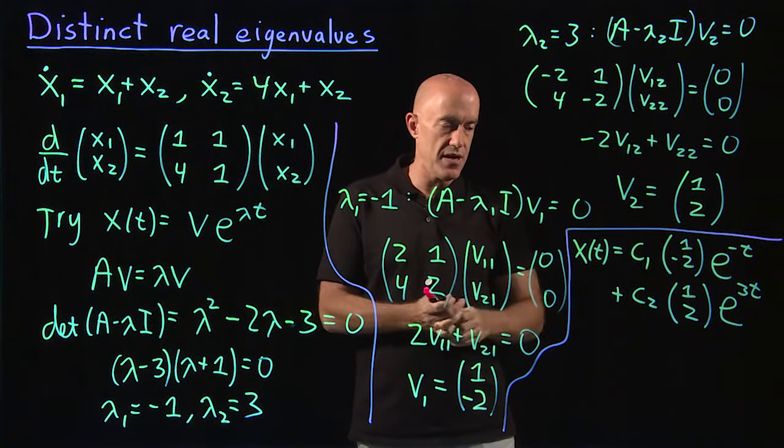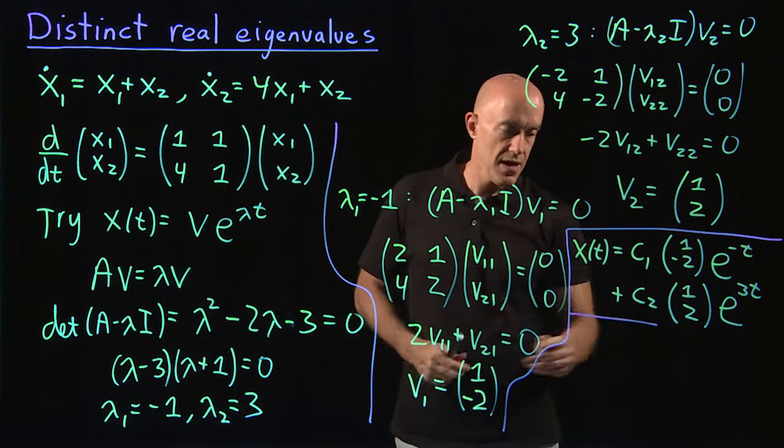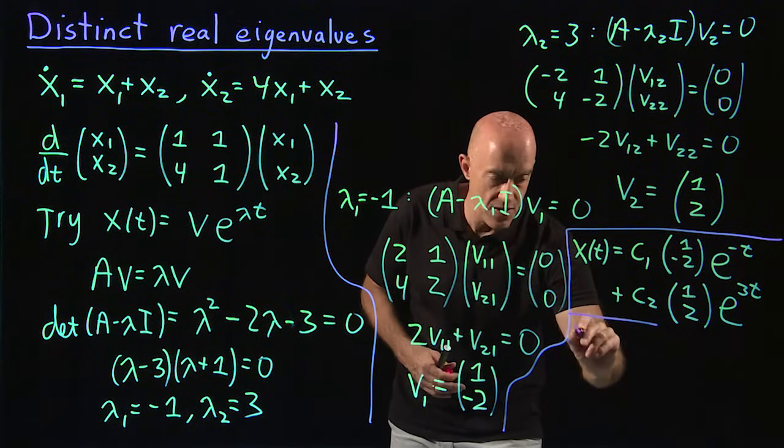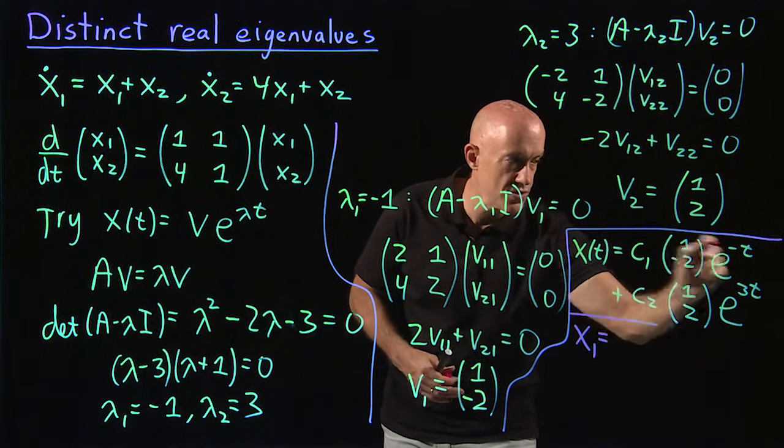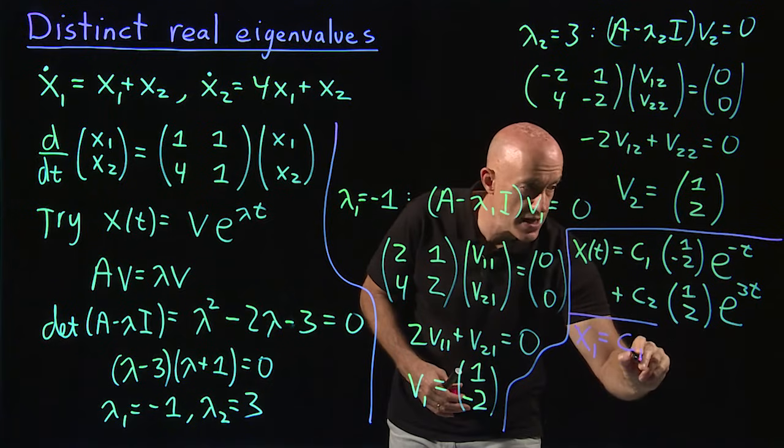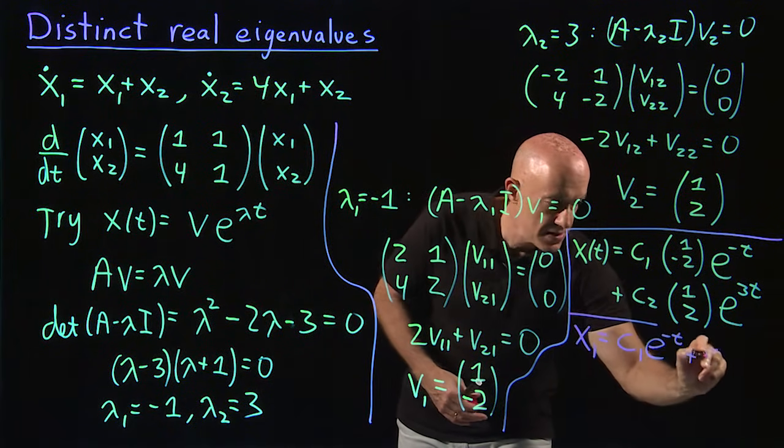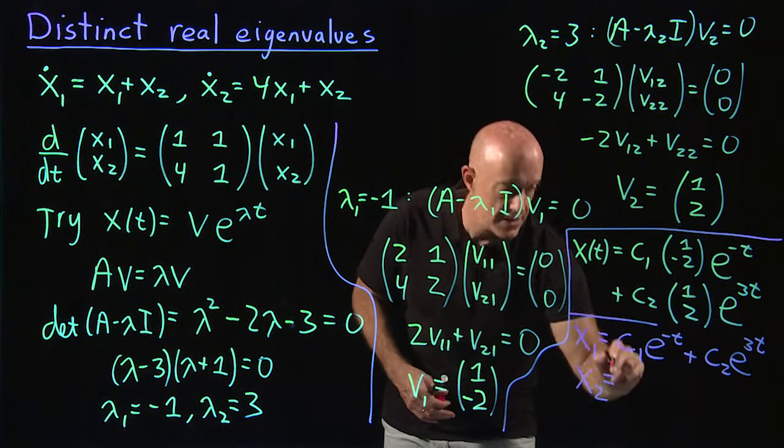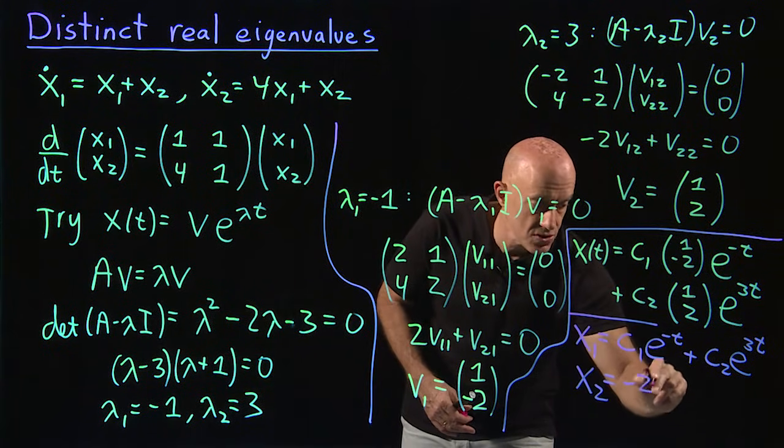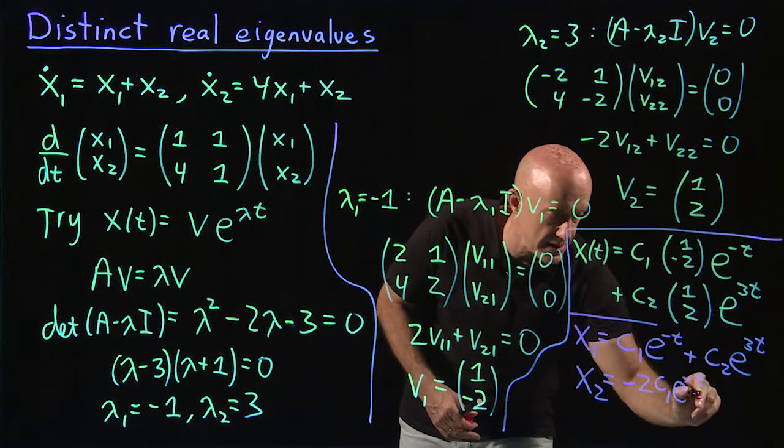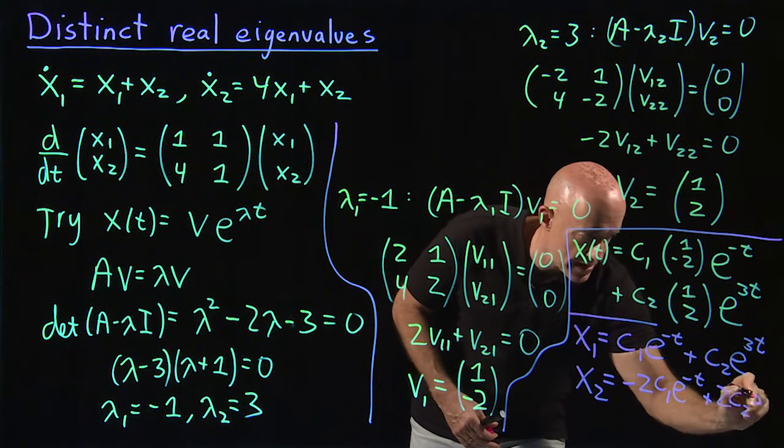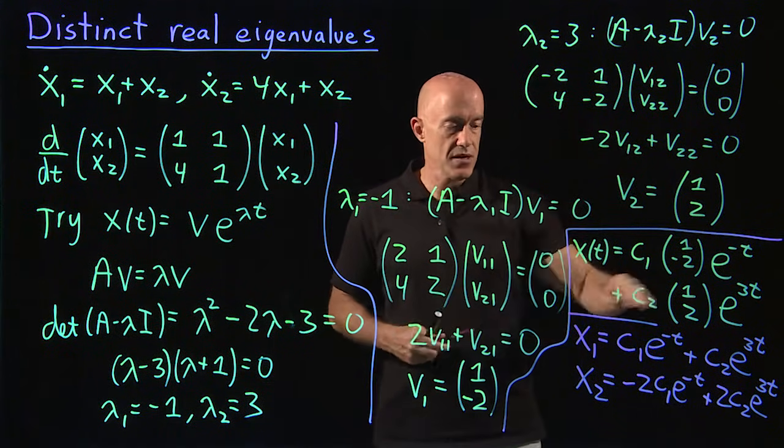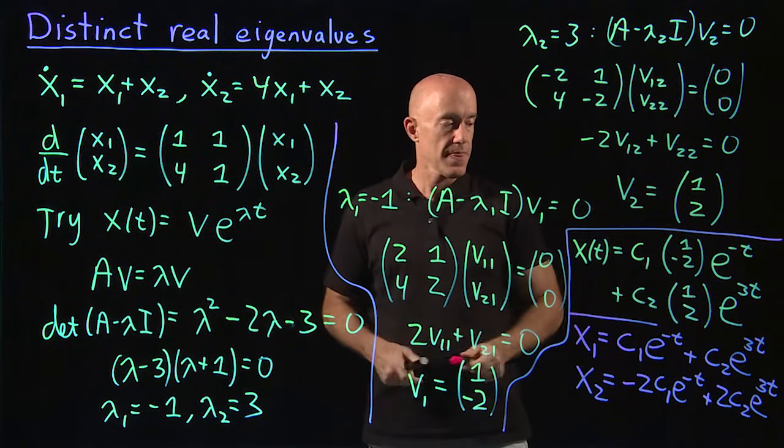If you like, you can write that out. There's really no purpose to do that, but maybe just so you see it better. Our x₁ here is equal to just the first row: c₁ times e to the minus t plus c₂ times e to the 3t. The same solution, just written out component by component.